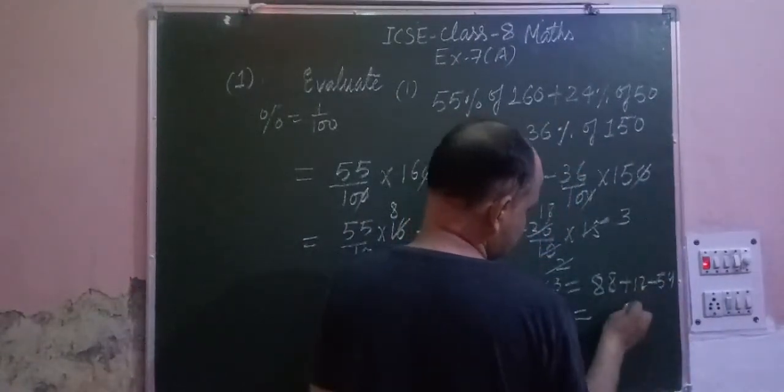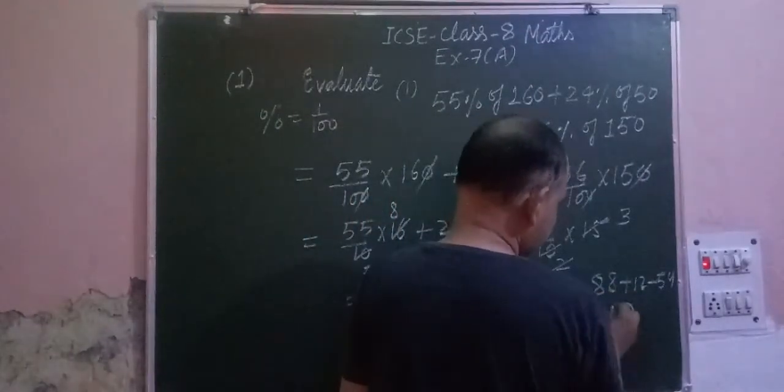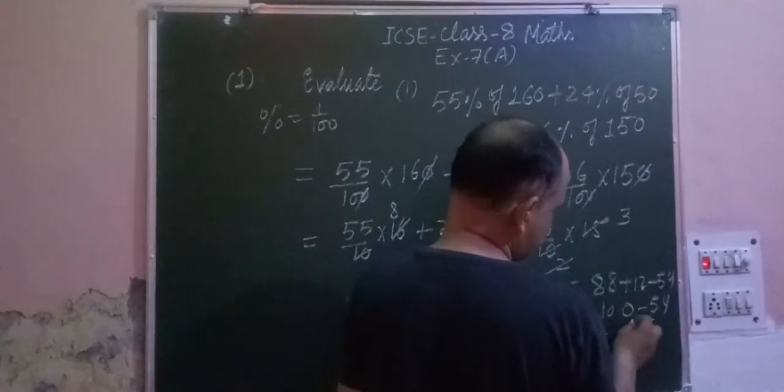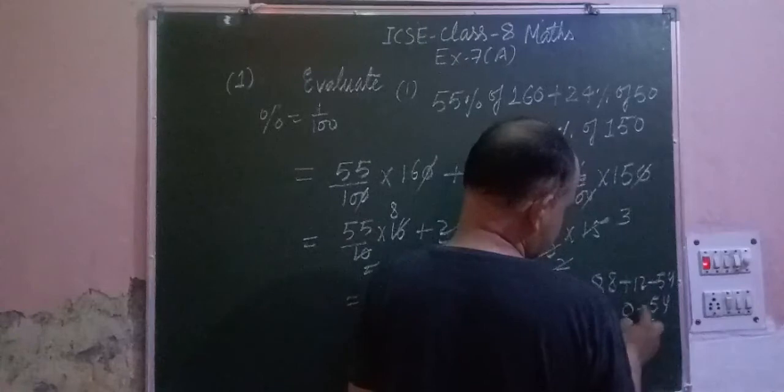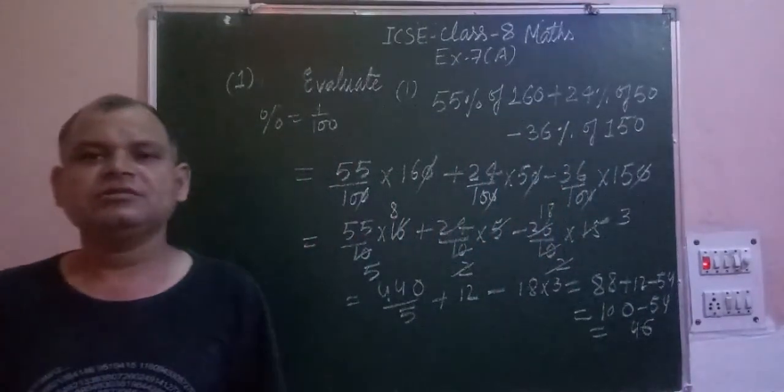This is 88, and 100 minus 54 we got 46. And 9 minus 5 is 46. So the answer to this question is 46.